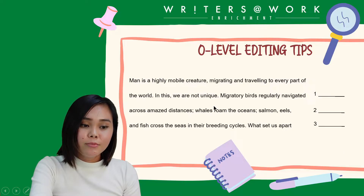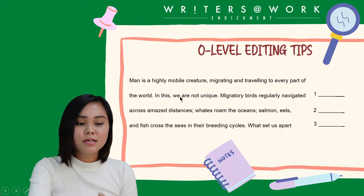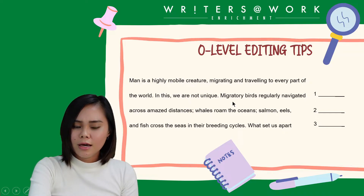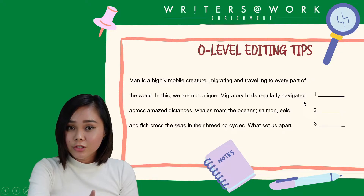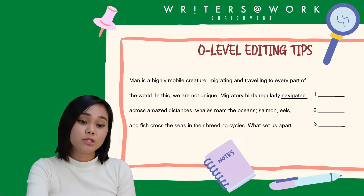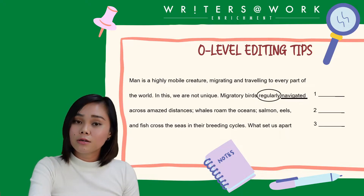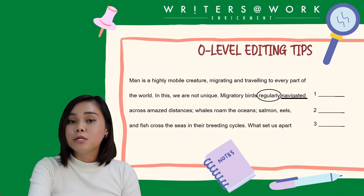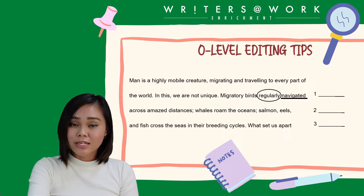Man is a highly mobile creature, migrating and traveling to every part of the world. Migratory birds regularly navigated. We have a first error here — the word 'navigated'. There are two things you should be considering. Firstly, there's the word 'regularly'. When something is done regularly — all the time, every two weeks, every two months, every day — you should be using present tense. Therefore, 'navigated' is wrong.